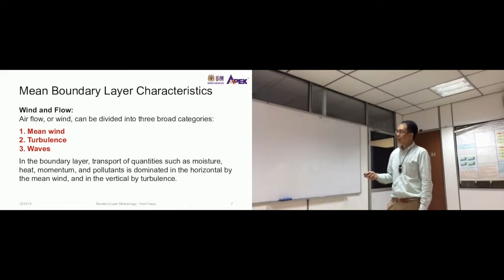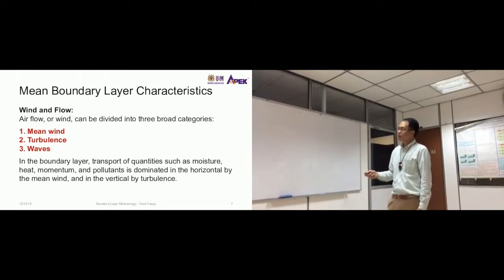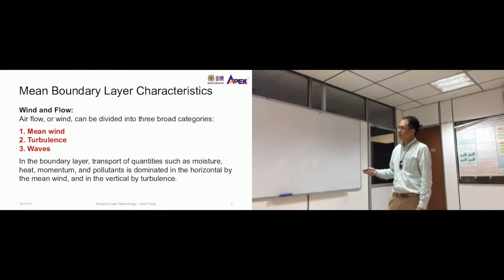In the boundary layer, transport of quantities such as moisture, like water vapor, heat from the surface, momentum, friction, and pollutants is dominated in the horizontal by the mean wind and in the vertical by turbulence.